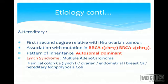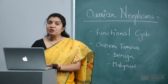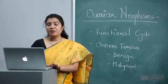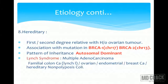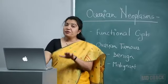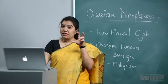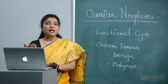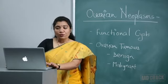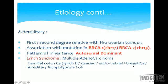Heredity is very important. First or second degree relative with ovarian tumor puts a patient at very high risk. There is an association with mutation in BRCA1 (chromosome 17) and BRCA2 (chromosome 13) genes — these are tumor suppressor genes. If mutated, the patient has the highest risk of CA ovary and CA breast. Pattern of inheritance is autosomal dominant. Lynch syndrome involves multiple adenocarcinomas — familial colon cancer (Lynch 1), ovarian, endometrial, breast CA, and hereditary non-polyposis coli.